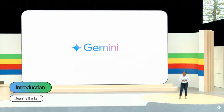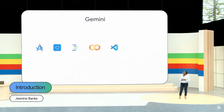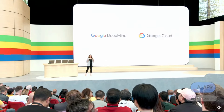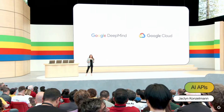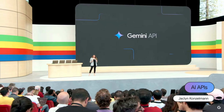Gemini is available to all developers to use in Android Studio, Chrome DevTools, Project IDX, CoLab, VS Code, IntelliJ, and Firebase. We make it easy to start building an AI app with a simple API integration, so you can focus on building the best possible products for your users.